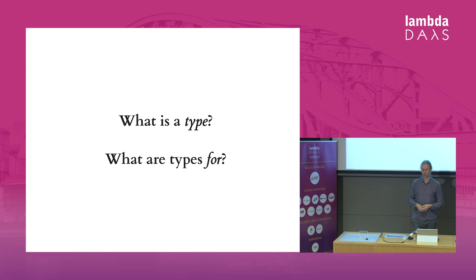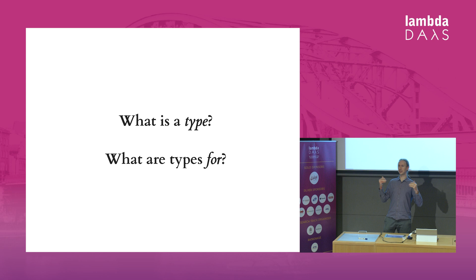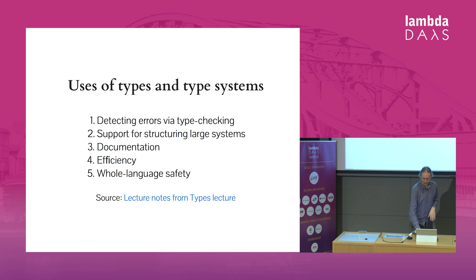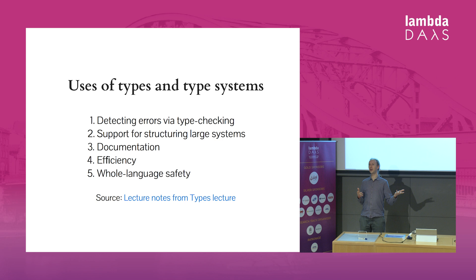I think types are a really nice example where you can think about it. When you think what is a type, you can read a paper that says a type is tau, and there's primitive types alpha, or there's functions tau to tau, and that's types. Done. And then you can wonder what types are for, and they'll tell you, types give you soundness.